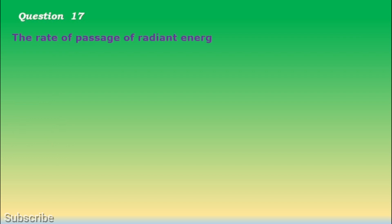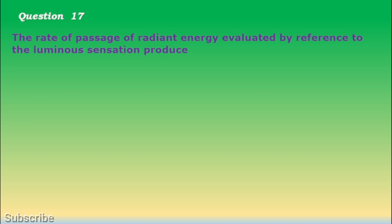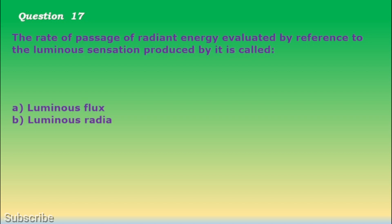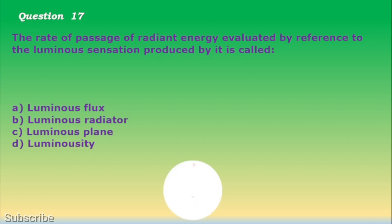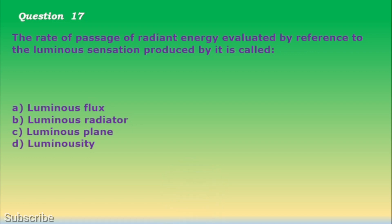Question number 17. The rate of passage of radiant energy evaluated by reference to the luminous sensation produced by it is called: a. Luminous flux, b. Luminous radiator, c. Luminous plane, d. Luminosity. The correct answer is letter a. Luminous flux.